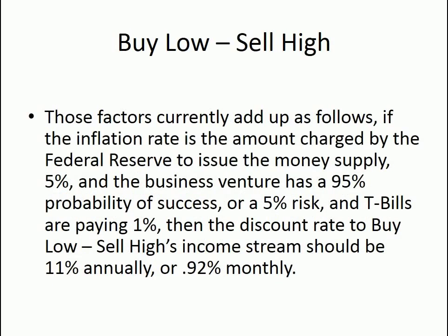Those factors currently add up as follows: if the inflation rate is 5% — the amount charged by the Federal Reserve to issue the money supply — and the business venture has a 95% probability of success (or 5% risk), and T-bills are paying 1%, then the discount rate applied to buy low, sell high's income stream should be 11% annually, or 0.92% monthly.